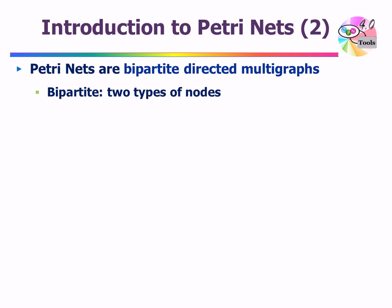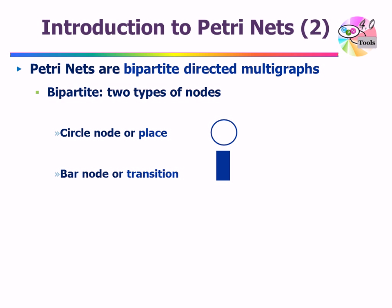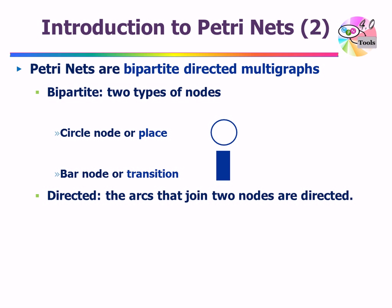Technically speaking, Petri Nets are called bipartite directed multigraphs. They are bipartite because there are two different types of nodes. One kind of node is called a place — they are drawn as circular nodes, or we may also use ovals to draw places. The other kind of node is called a transition — they are drawn as rectangles or bar nodes. There will be directed arcs that join places to transitions and transitions to places. Therefore, we call them bipartite directed multigraphs.